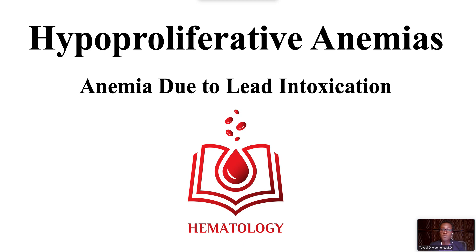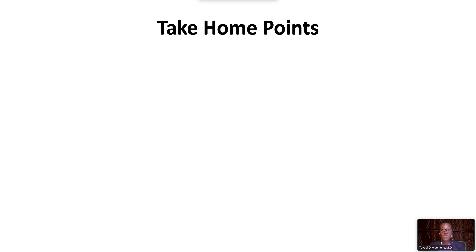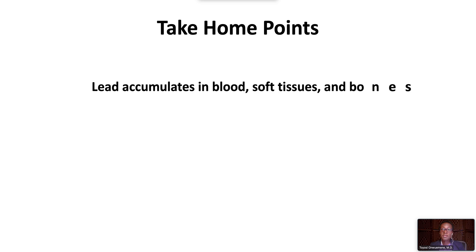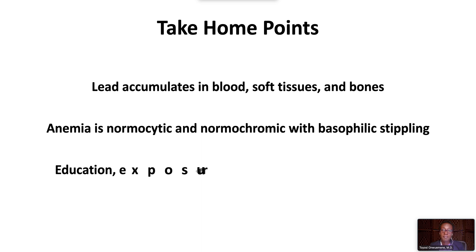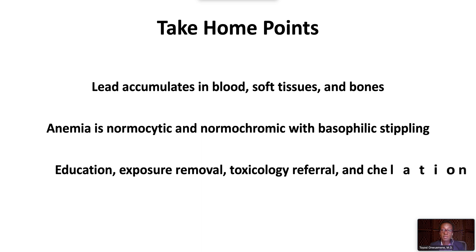Welcome to hypoproliferative anemias, anemia due to lead intoxication. We have the following take-home points. With exposure, lead accumulates in blood, soft tissues, and bones. Anemia due to lead intoxication is normochromic and normocytic, with basophilic stippling on the peripheral blood film. Management involves education, exposure removal, toxicology referral, and chelation therapy.